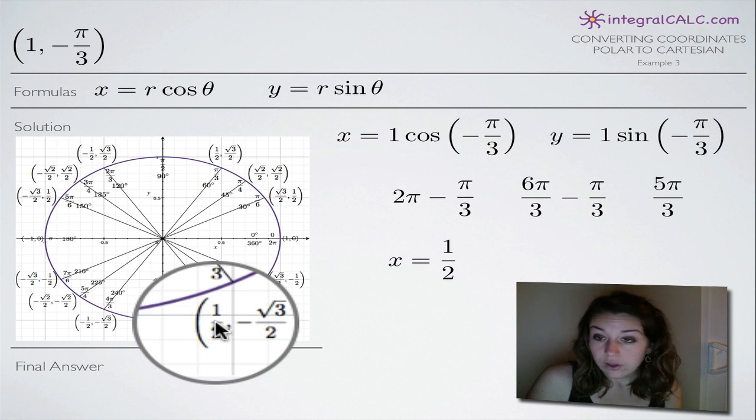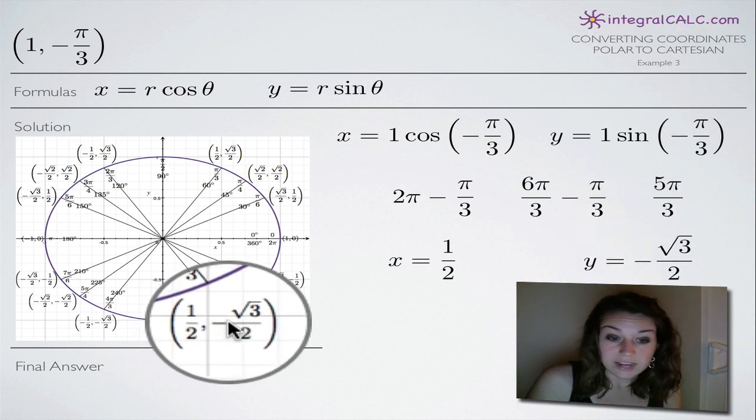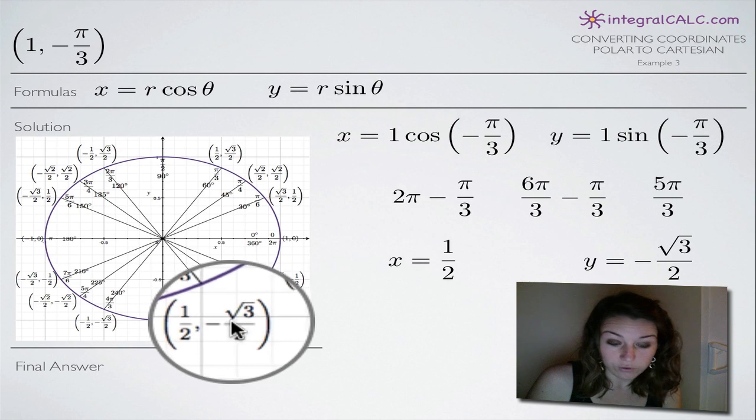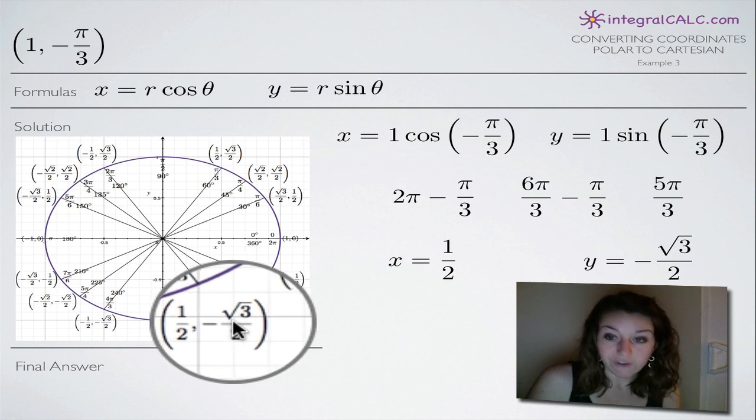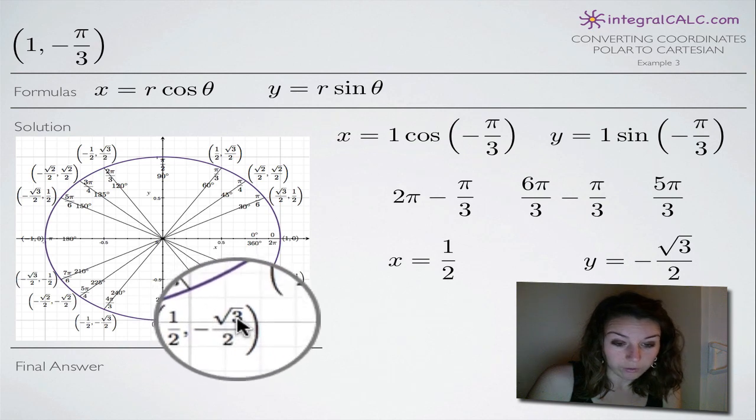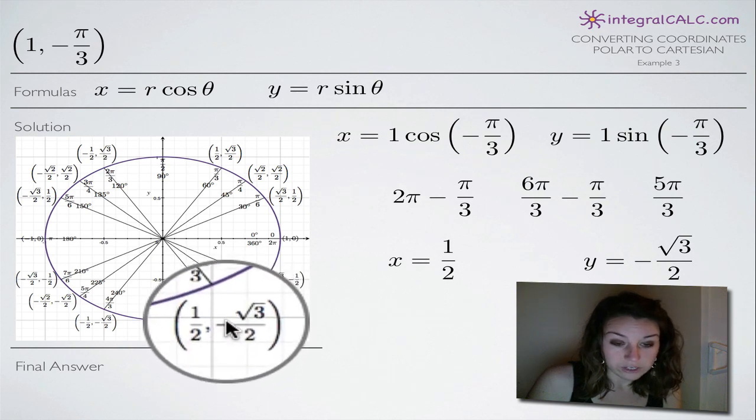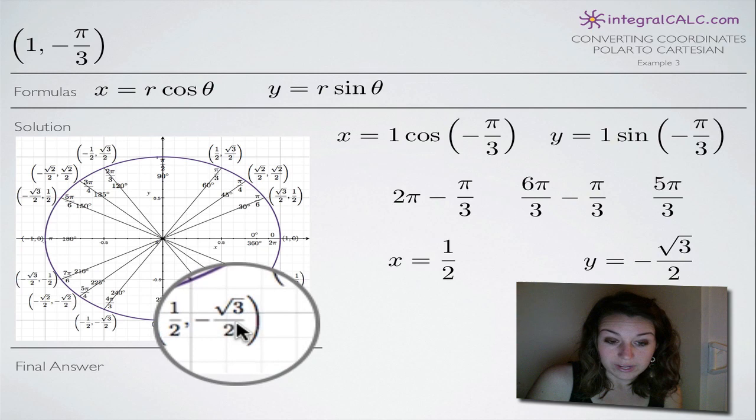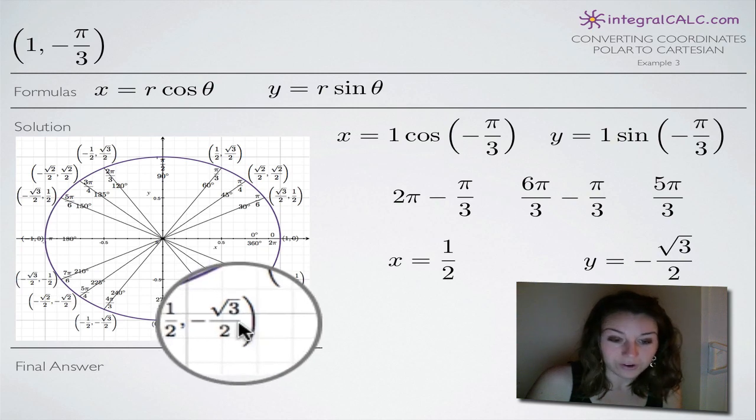And similarly, y equals 1 sine of negative pi over 3 is going to give us 1 times negative square root of 3 over 2, because sine of our angle 5 pi over 3 is the y-coordinate of our Cartesian point here. So we get negative square root of 3 over 2.